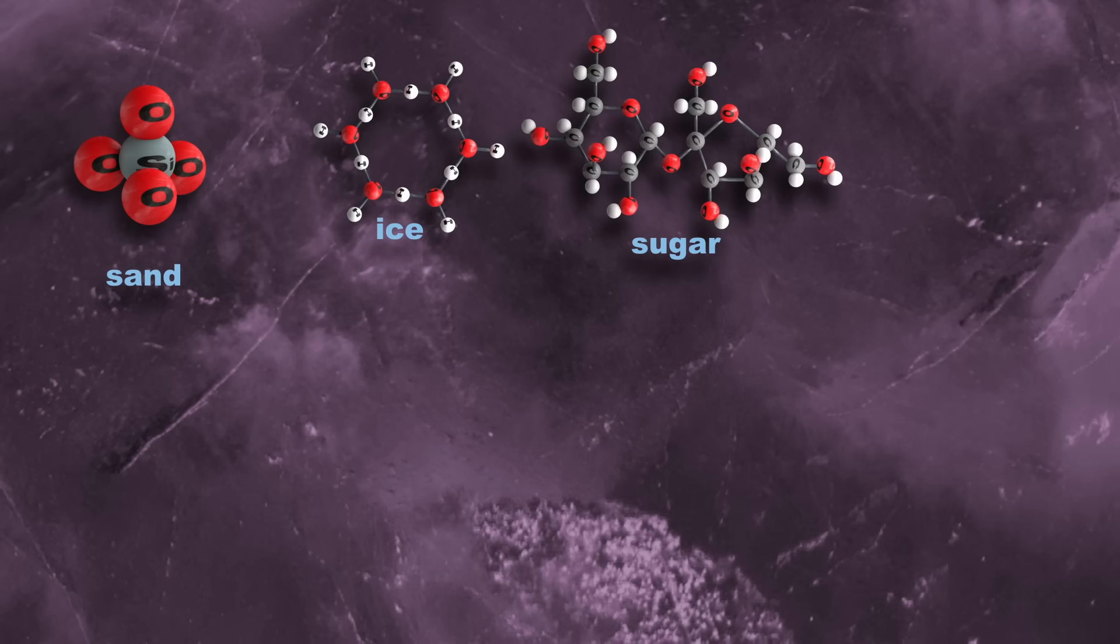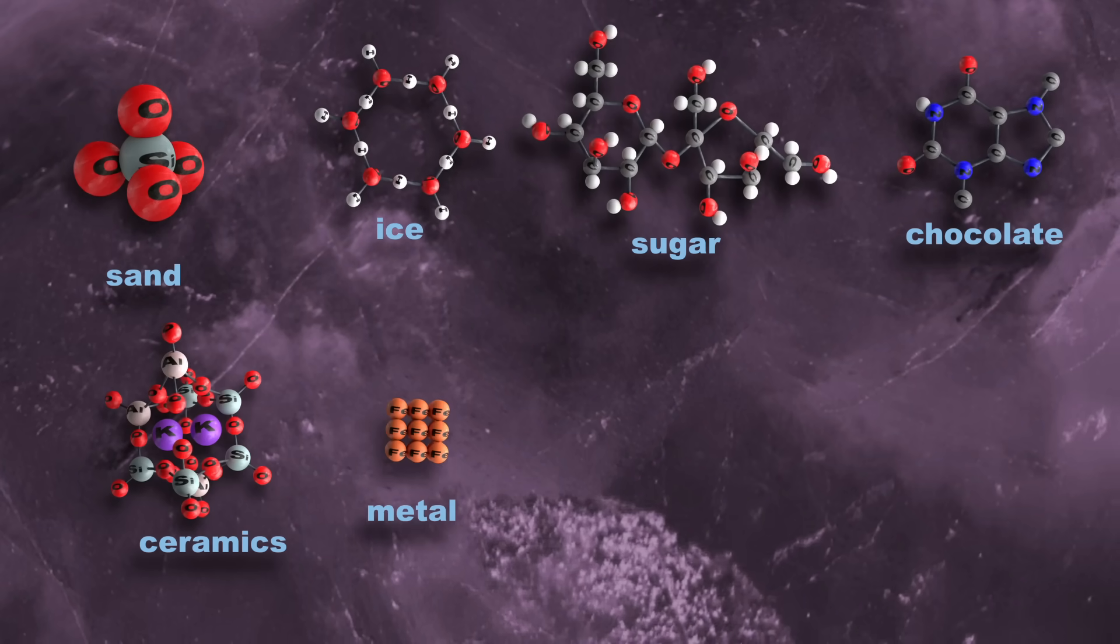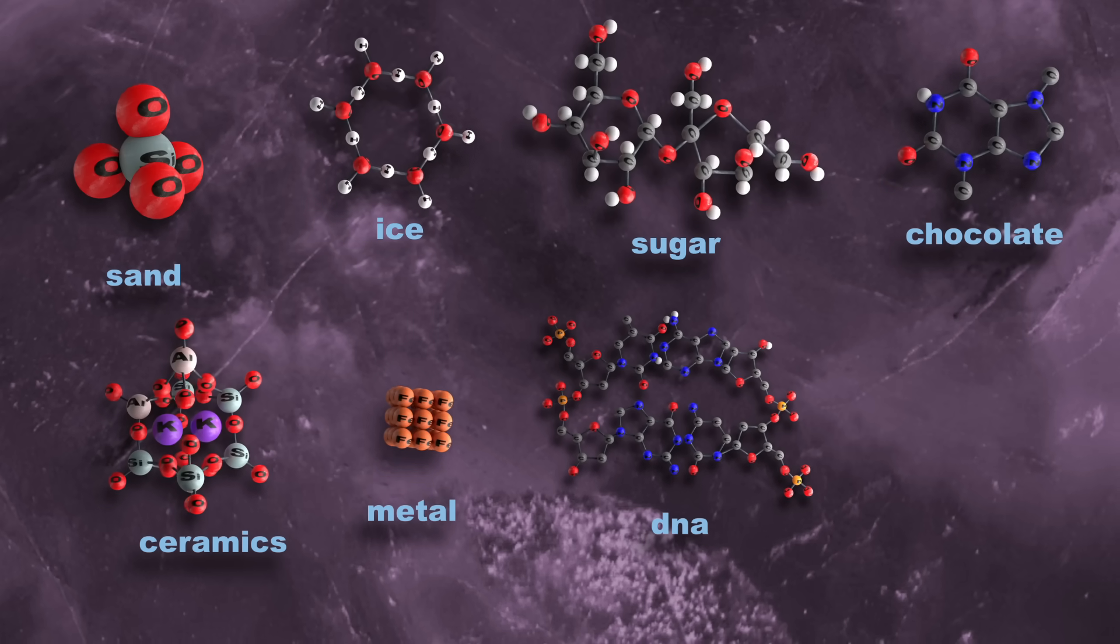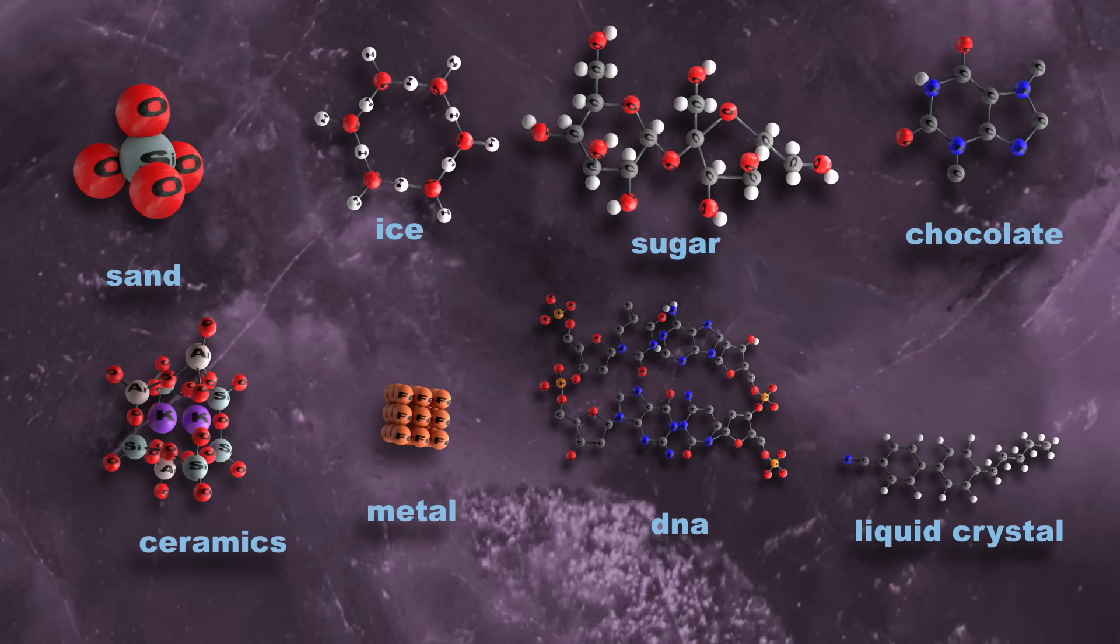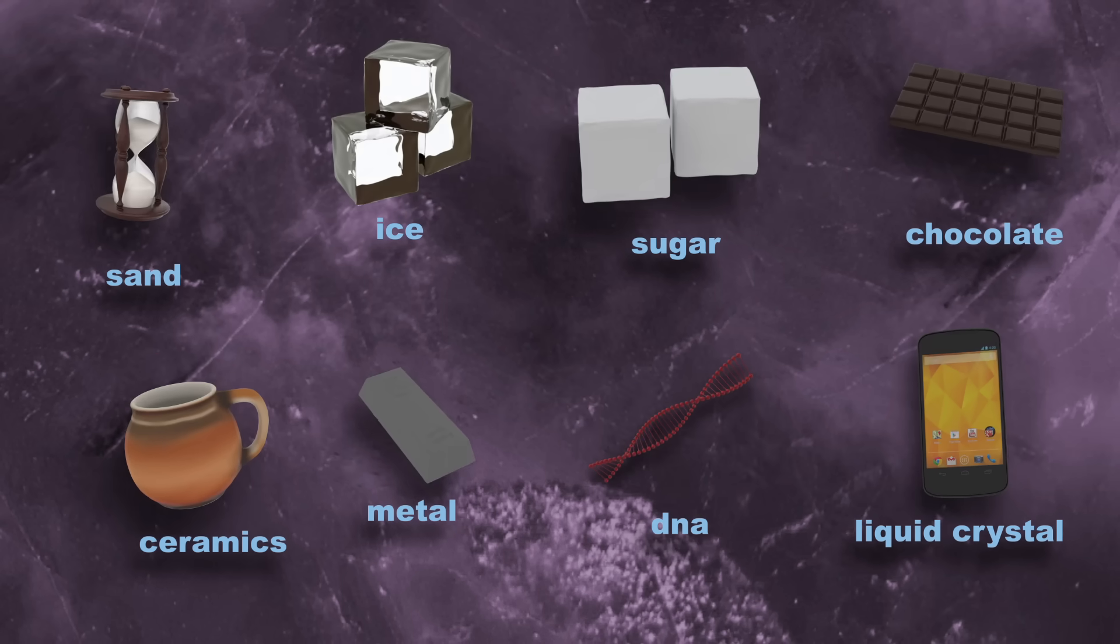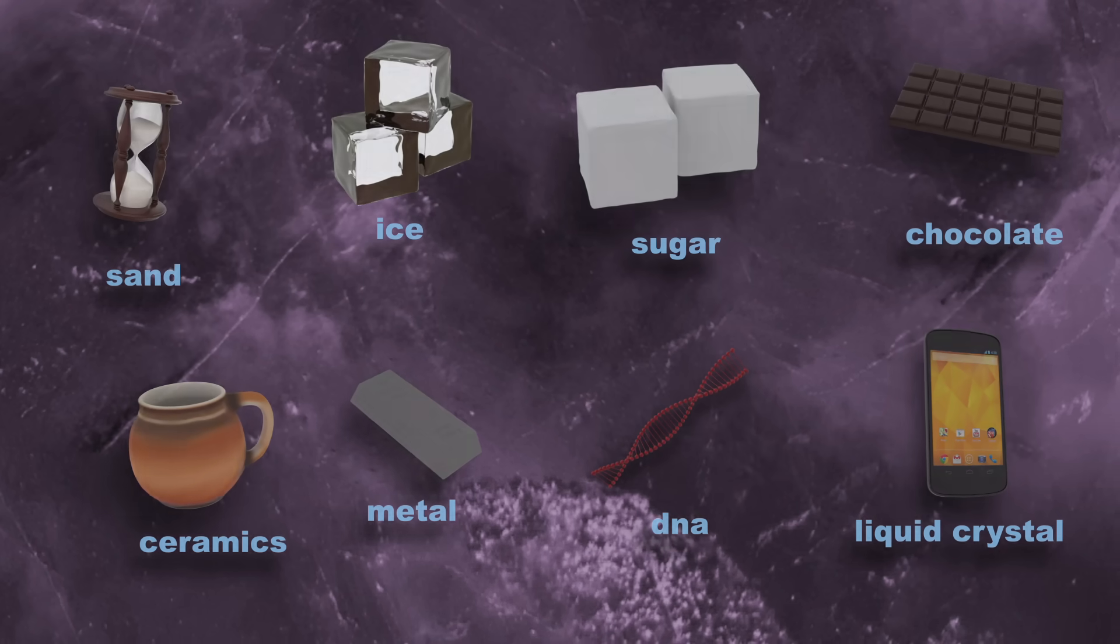Sand, ice, sugar, chocolate, ceramics, metals, DNA, and even some liquids have crystalline structures.